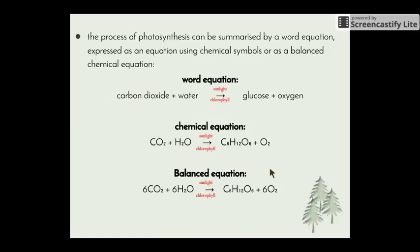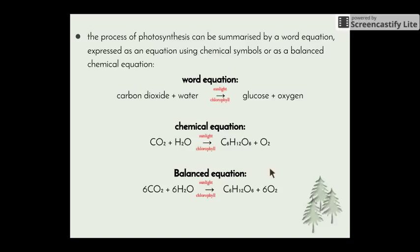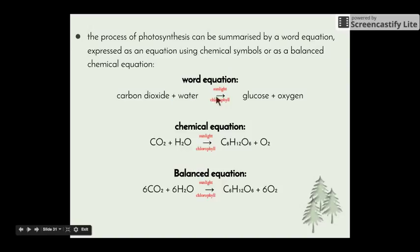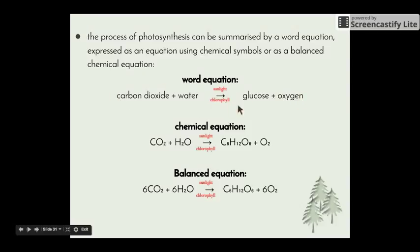The process of photosynthesis can be summarized by a word equation, and then expressed as a chemical equation using chemical symbols. At this level, we only need to know the word equation. The word equation for photosynthesis is: reactants are carbon dioxide plus water, in the presence of sunlight and chlorophyll, giving us glucose and oxygen. To get full marks, you must include every single part — including the sunlight and the chlorophyll — because photosynthesis doesn't take place without either of them.